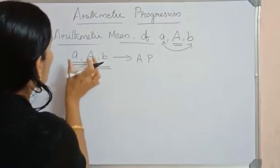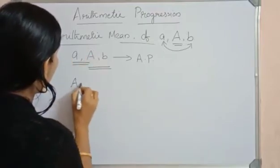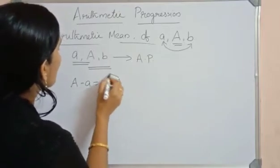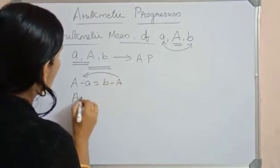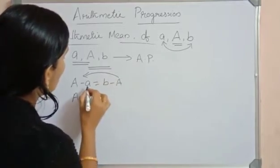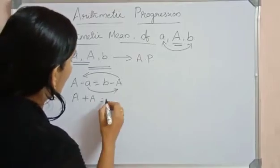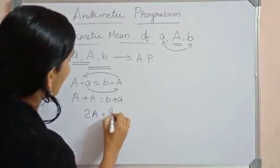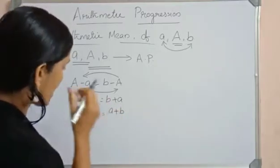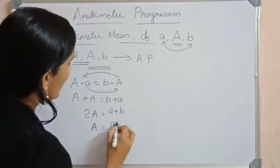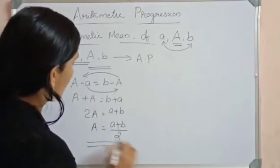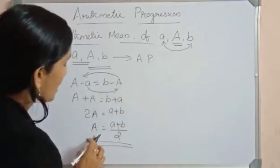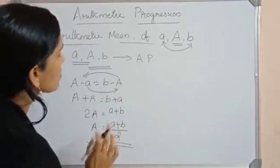Let's find it. The difference between the first two terms is A minus A, and that is the same as B minus A. Bringing A to the other side gives A plus A equals B plus A, so 2A equals A plus B. Therefore, A is equal to A plus B divided by 2. The arithmetic mean between two terms is given by A equals (A + B) / 2.